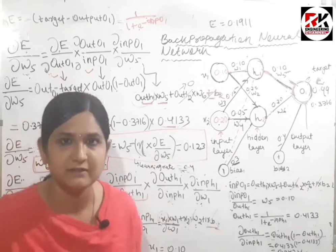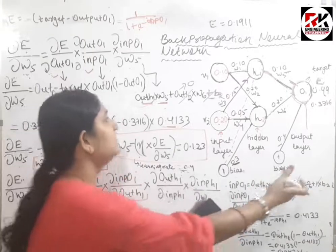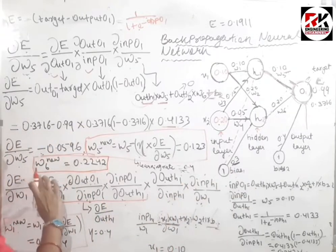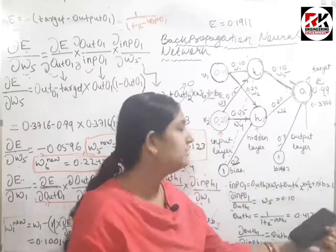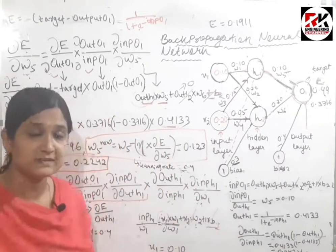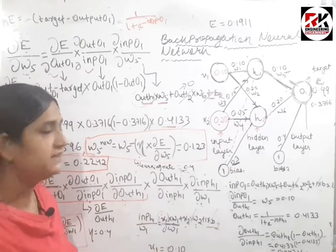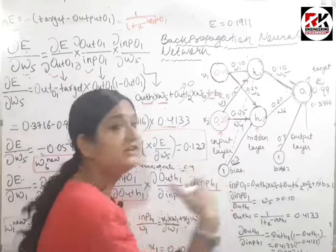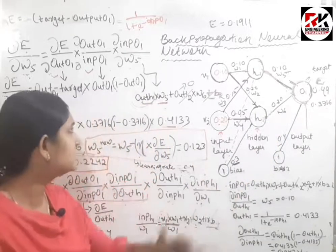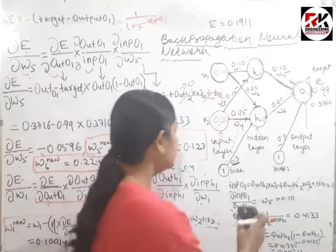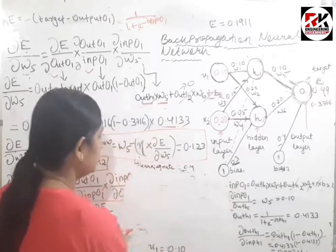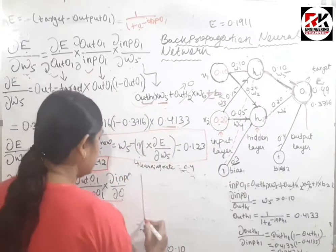As the neural network increases in layers and hidden layers, the chain rule will also grow longer and become very lengthy. But this is the process of calculating the updated weights — this is the trick of applying the chain rule. I will now explain the learning rate with the help of a graph.